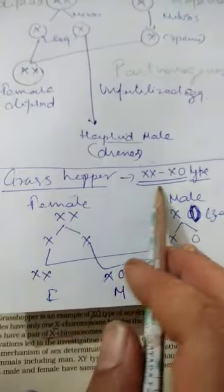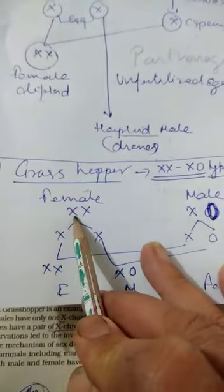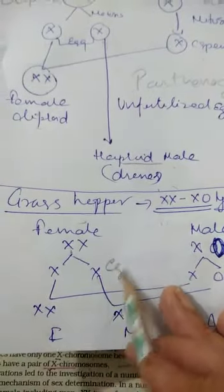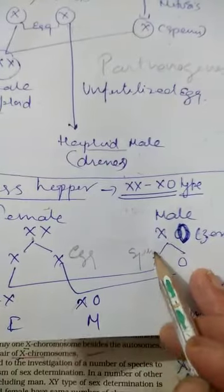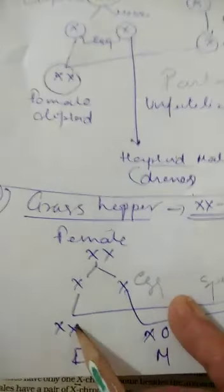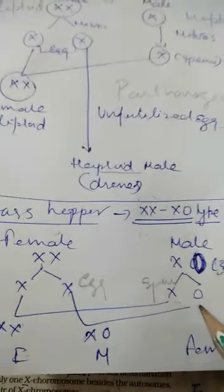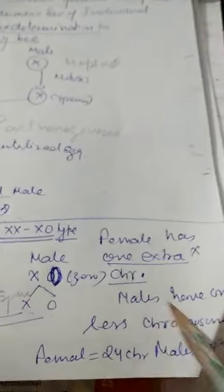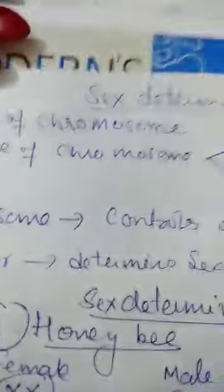In grasshoppers, XO type sex determination is present. Females have two X chromosomes and males have only one X chromosome. Females produce eggs bearing X chromosomes. Of the male's sperm, 50% bear an X chromosome and 50% do not. When an egg fertilizes with an X-bearing sperm, an XX female forms; when fertilized by a sperm without X, an XO male forms. Females have 24 chromosomes and males have 23.